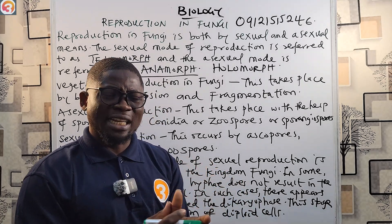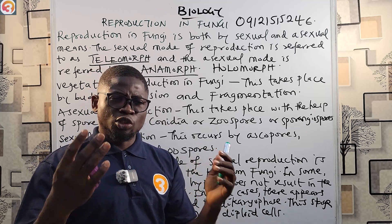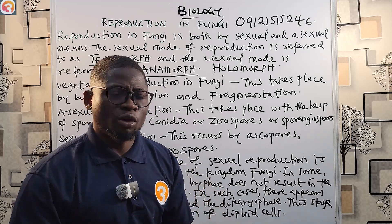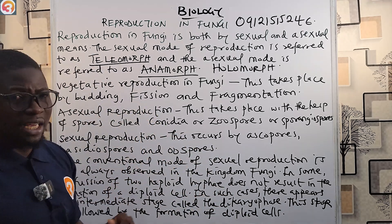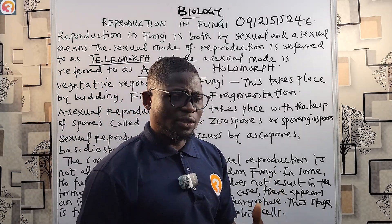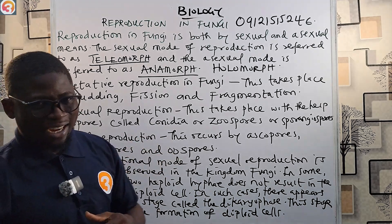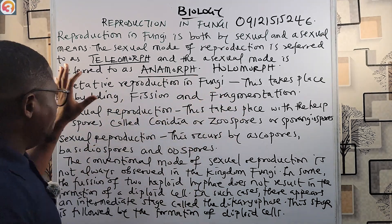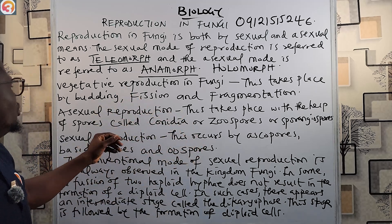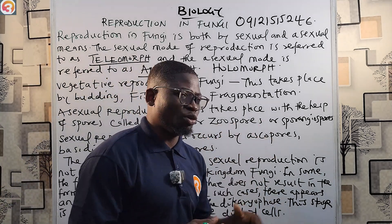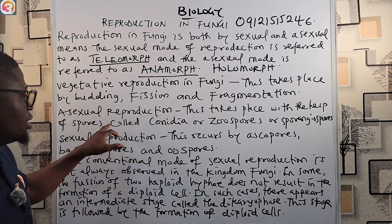For fission, unicellular fungi like yeast undergo nuclear division and split into two daughter cells, which then grow to form a population. Fungi also reproduce by fragmentation, where a living organism breaks down into fragments and each fragment is an individual that thrives on its own. So vegetative reproduction in fungi takes place by budding, fission, and fragmentation. Asexual reproduction takes place with the help of spores called conidia, zoospores, or sporangiospores.